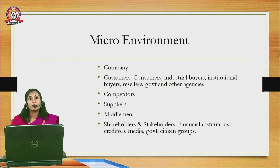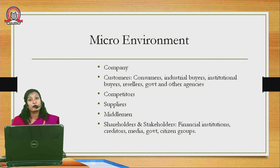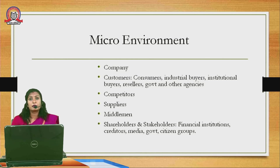Industrial buyers are large companies that reprocess products and sell them — for example, steel or cement manufacturers. Institutional buyers include educational institutions like schools that order wooden benches from wholesale manufacturers. Then there are resellers, government agencies that purchase products through official channels, and various small and large middlemen or agents who help in the selling process.